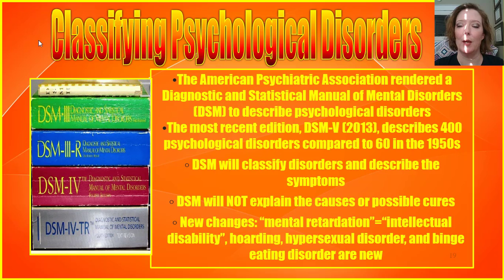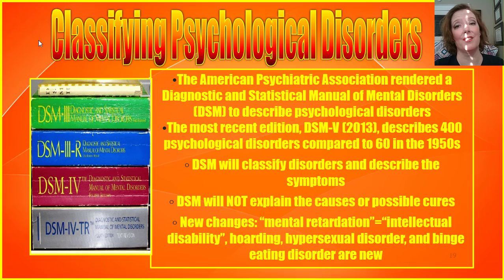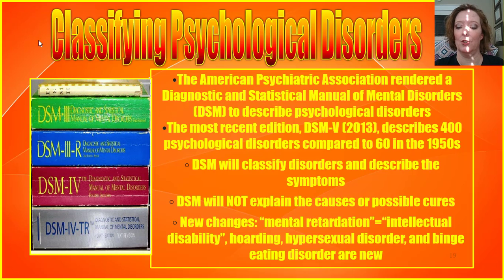Thinking back to the beginning of the video, the DSM — the Diagnostic and Statistical Manual — is how we classify psychological disorders. The American Psychological Association periodically edits this manual to capture society in that time frame. Our current edition describes 400 psychological disorders compared to only 60 in the 1950s, showing how complex and more informed diagnosis has become. The DSM classifies disorders and describes symptoms, but does not explain causes or possible cures. Notable changes in the current edition include replacing 'mental retardation' with 'intellectual disability,' and the addition of hoarding disorder, hypersexual disorder, and binge eating disorder, among others.